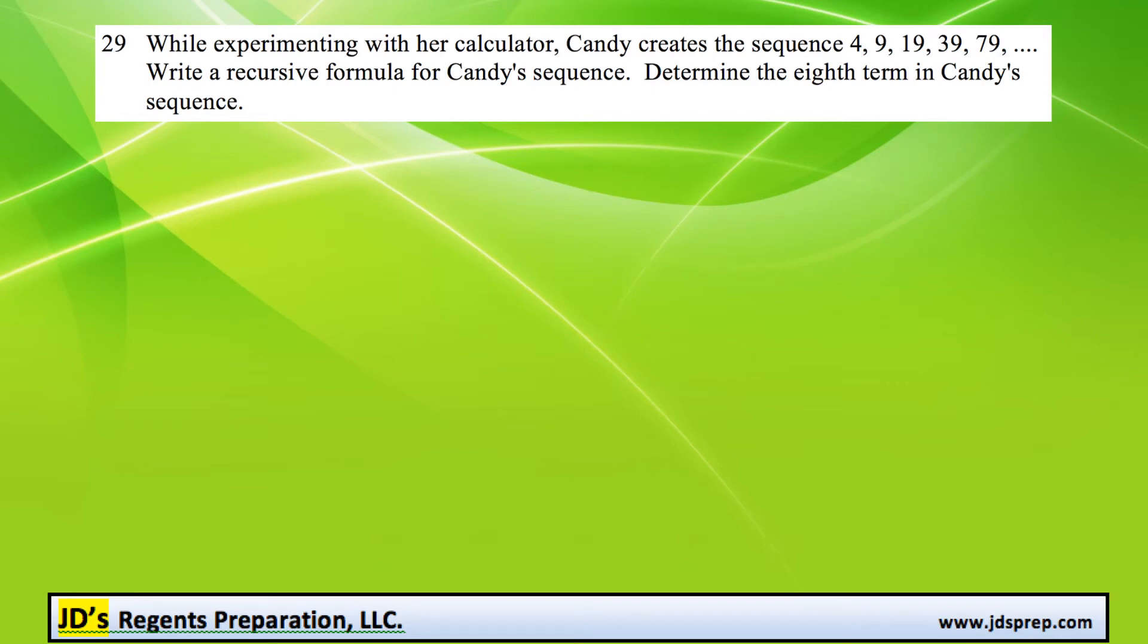This is question number 29 from the August 2017 Algebra 2 exam. We're given this sequence where our first term, A1, is equal to 4.